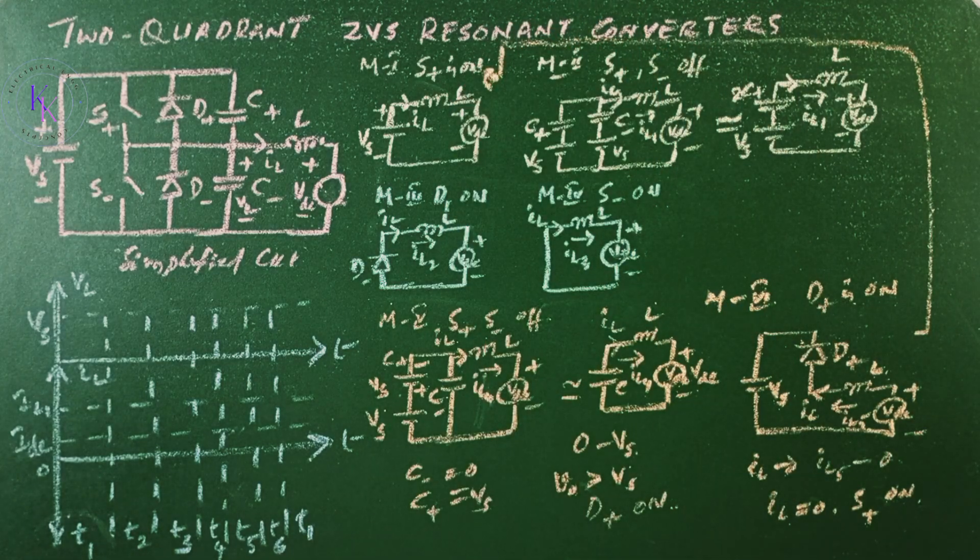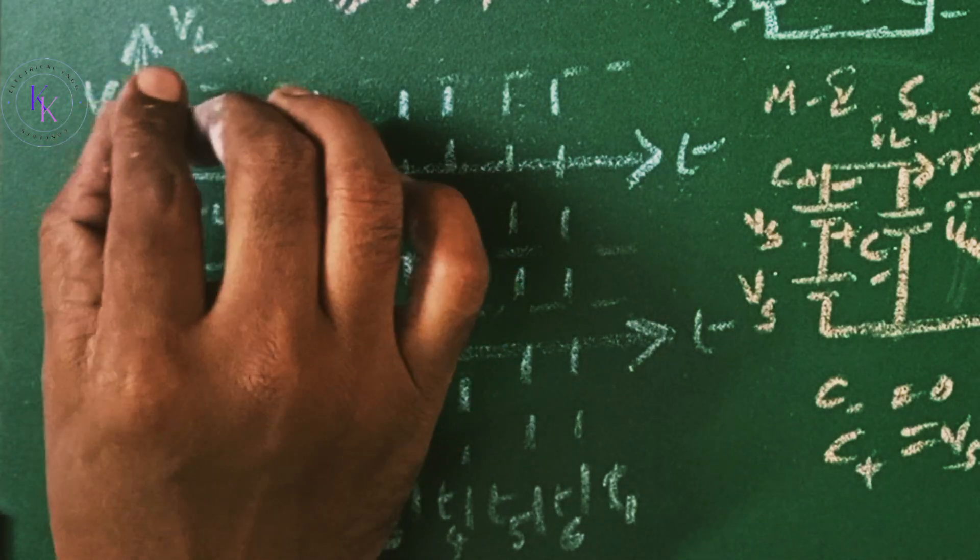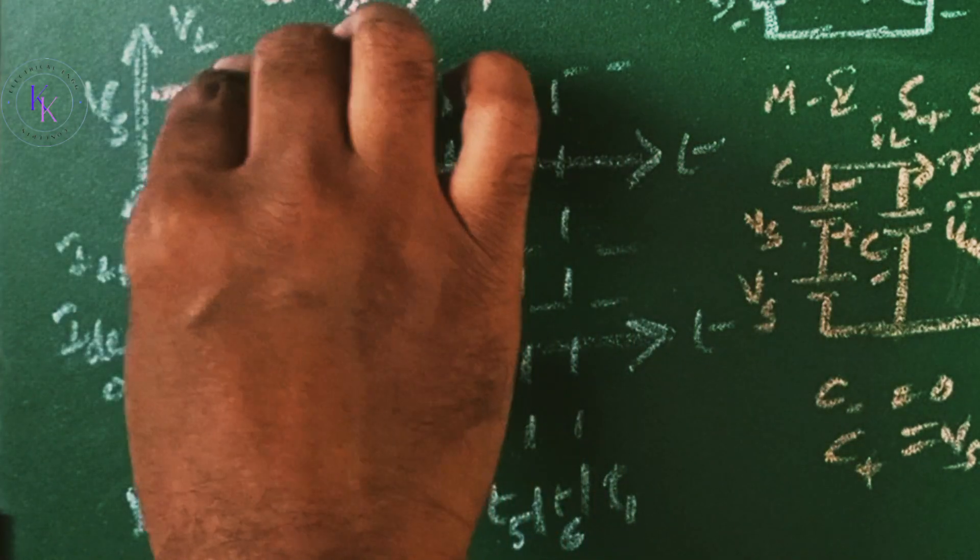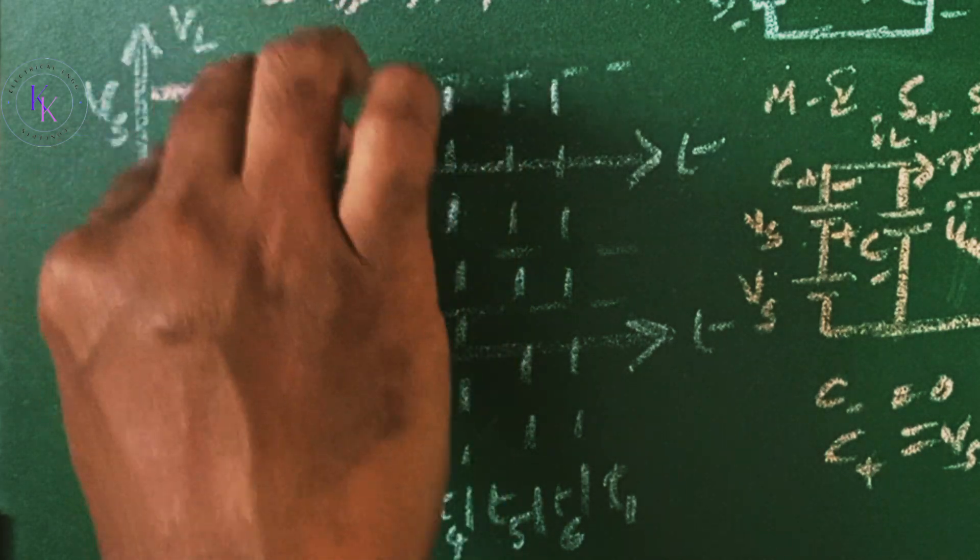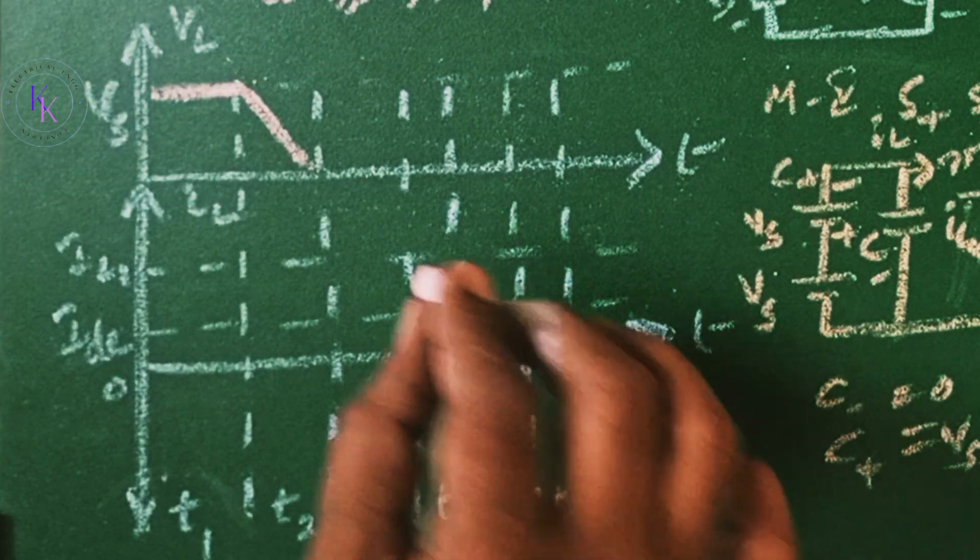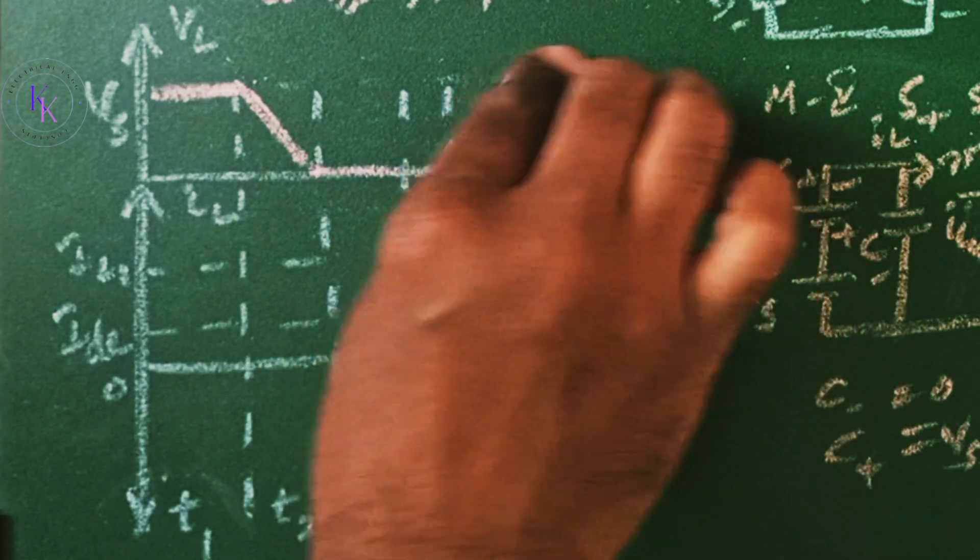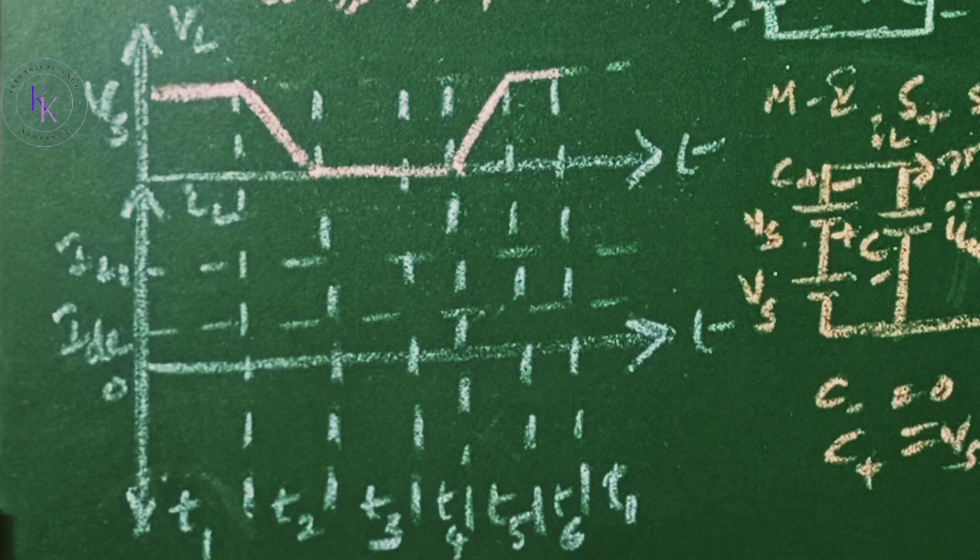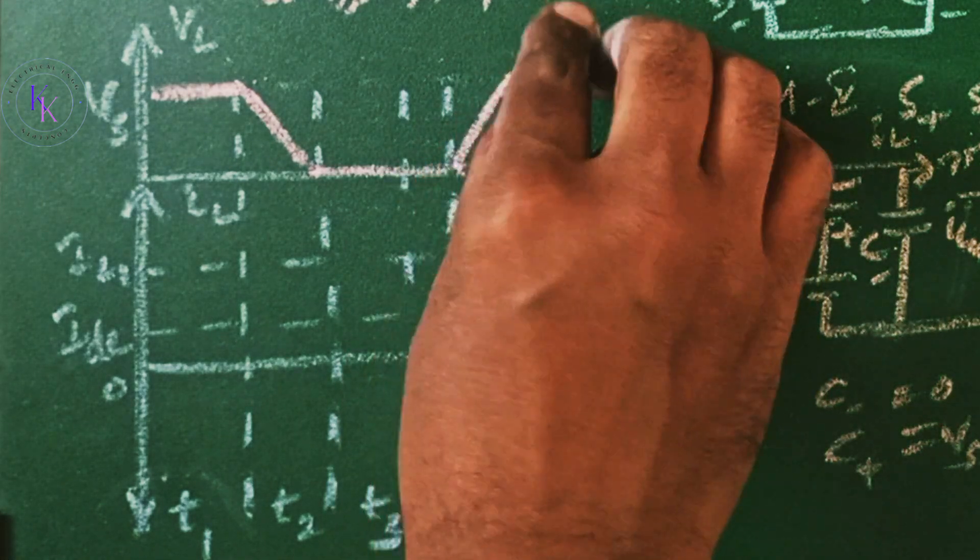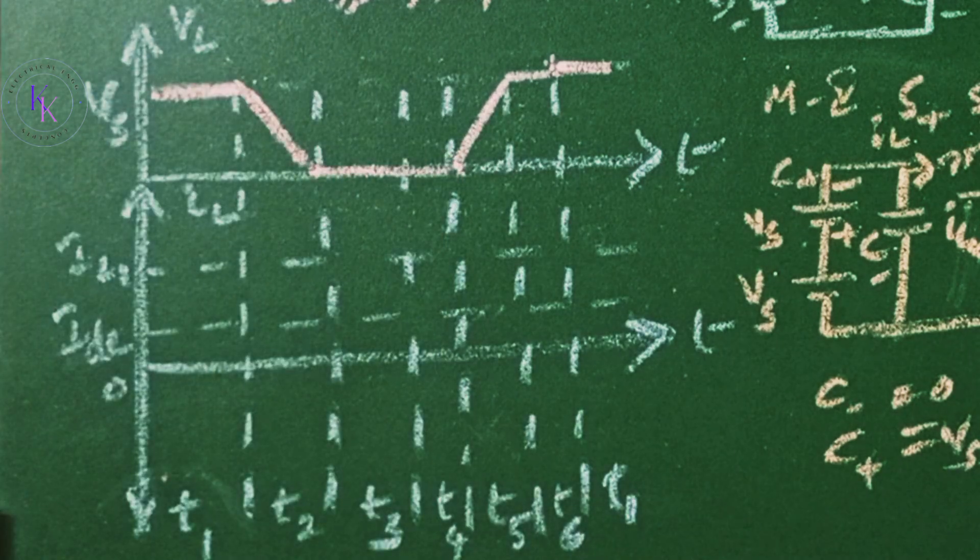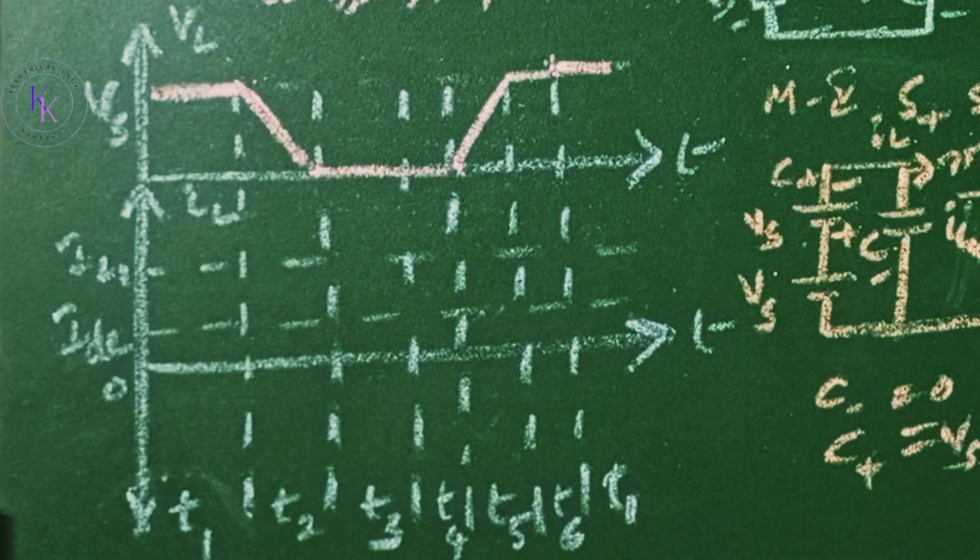Now let us draw the waveforms. VL equals Vs in mode 1. In mode 2 it will reach to 0 value and stays at 0 in 3 and 4, and in 5 it starts increasing and reaches Vs and stays at Vs in mode 6. In the next cycle it will be starting from Vs again. This is the voltage VL. This is nothing but the inductor voltage.